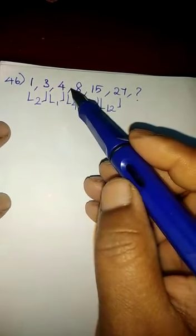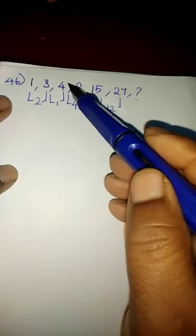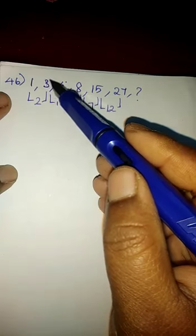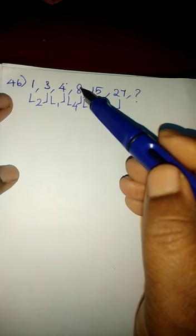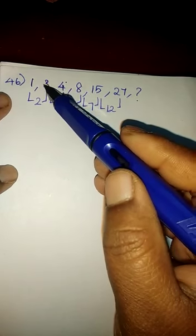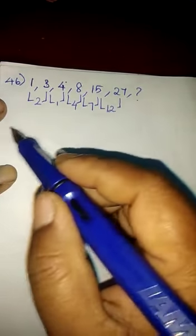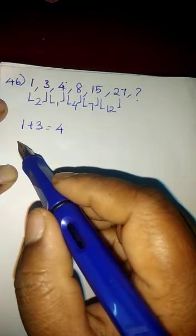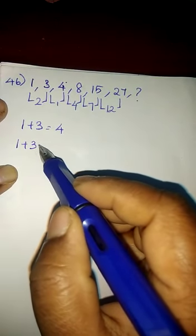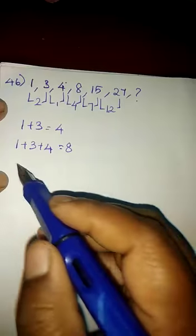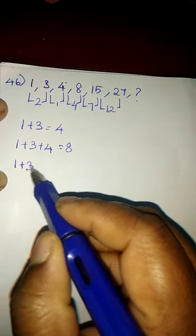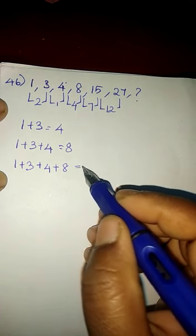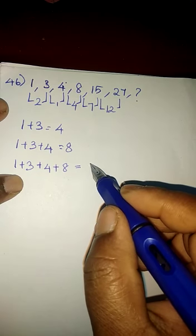Look at these numbers. Leave these first two numbers, take this one. If you look at this, this will be the sum of 1 plus 3. If you take this 8, this will be the sum of 4, 3 plus 1. So 1 plus 3 gives 4, 1 plus 3 plus 4 gives 8, 1 plus 3 plus 4 plus 8 gives 15.